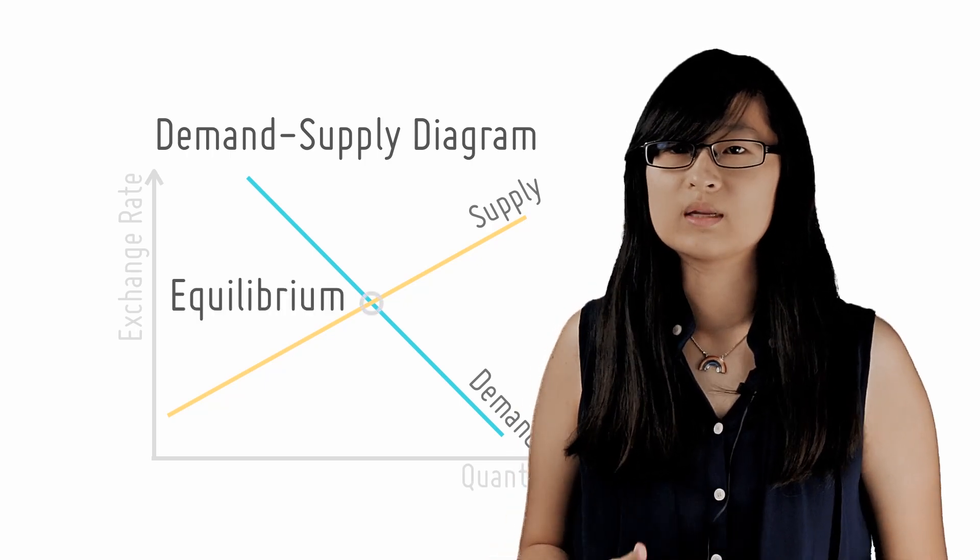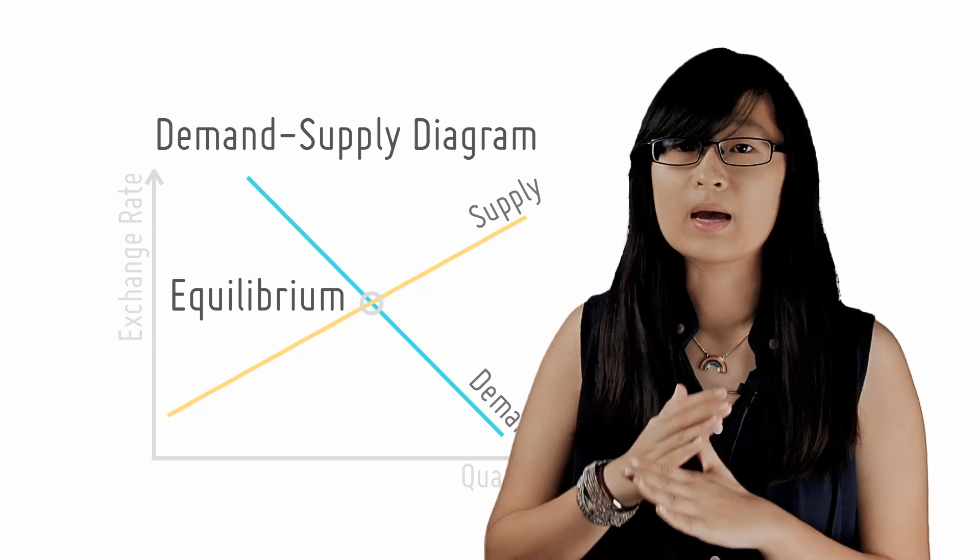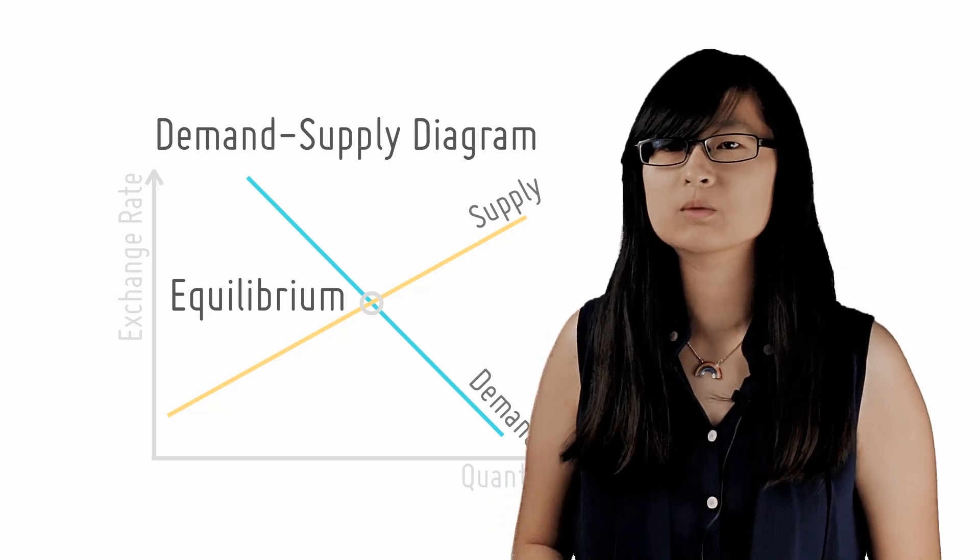By now, we should all know that the equilibrium of exchange rate is the point where the demand and supply curves intersect. But how do we explain why this happens?